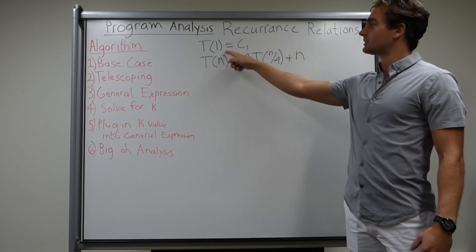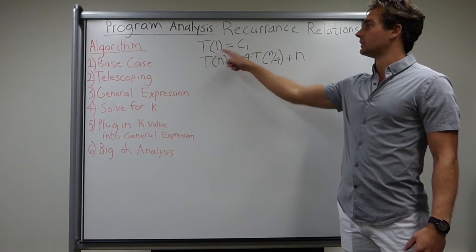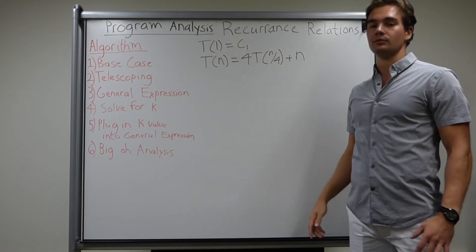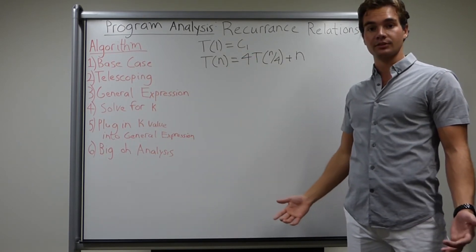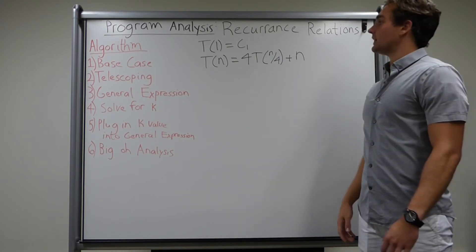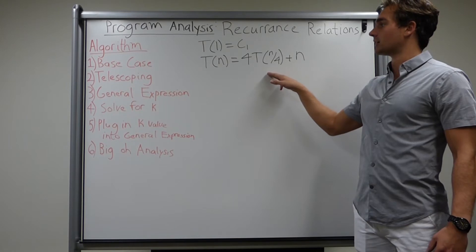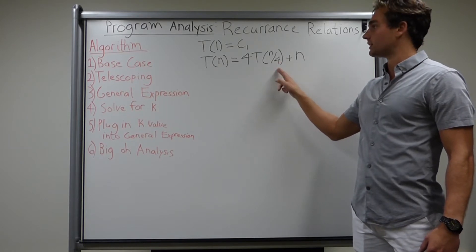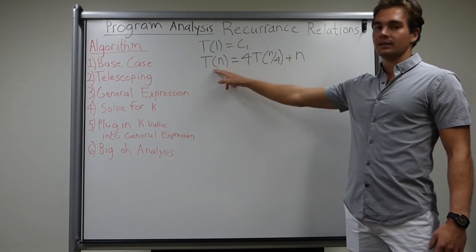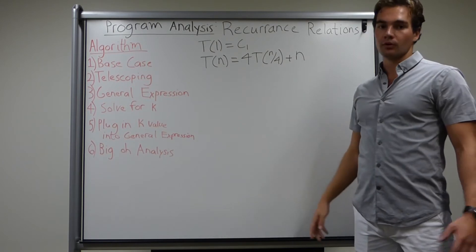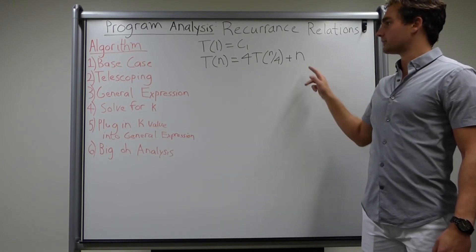Things to note are the base case, so T(1) equals some constant. This is when you get that constant time operation, the program will end. And then we have the function that is the recurrence relation. Notice how the function is in terms of itself. So we have up here, T(n) is equal to 4T(n/4) plus n.